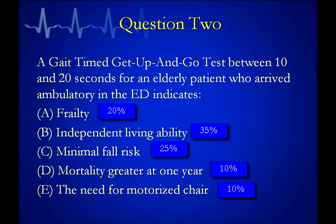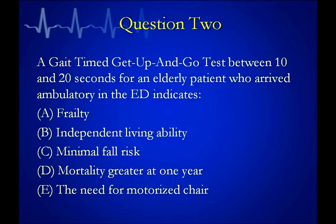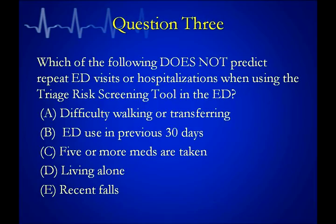Some of you have been exposed to Get-Up-and-Go testing through geriatric rotations in an outpatient setting. One more question: which of the following does NOT predict repeat ED visits or hospitalizations using the Triage Risk Screening Tool? Difficulty walking or transferring, ED use in previous 30 days, five or more medicines taken daily, living alone, or recent falls. Very interesting — most people pick D, living alone. We'll talk about that later.